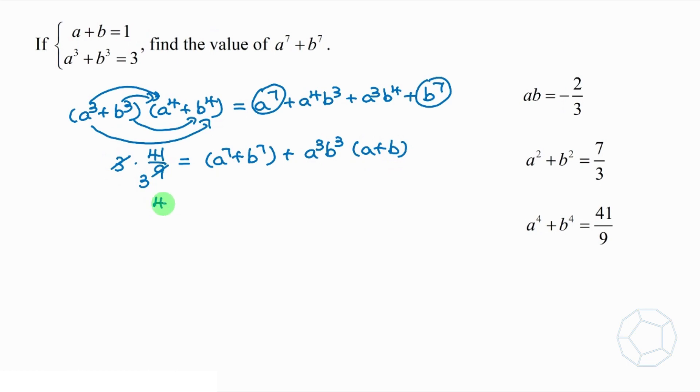Then 41 over 3 is equal to bracket a to the power 7 plus b to the power 7 plus bracket negative 2 over 3 whole cube times 1. Therefore, a to the power 7 plus b to the power 7 is equal to 41 over 3 minus bracket negative 8 over 27, which is 377 over 27.